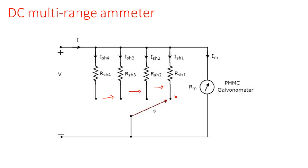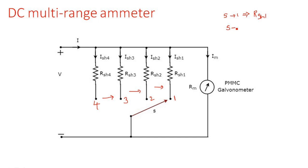When the switch is connected to the first position, that is position one, only Rsh1 is present in the circuit. What about Rsh2, Rsh3, and Rsh4? They are simply eliminated from the circuit because they are open-circuited.